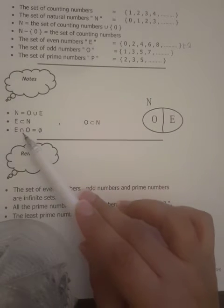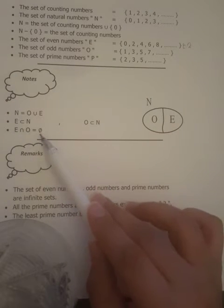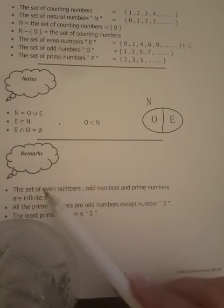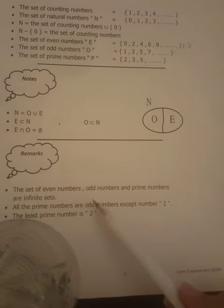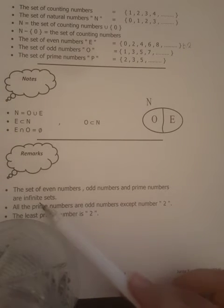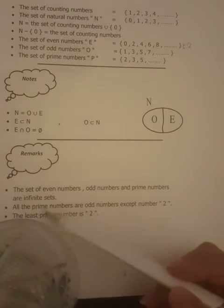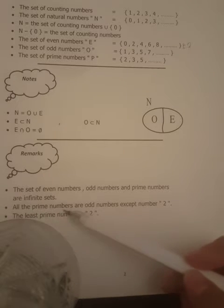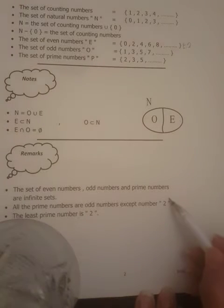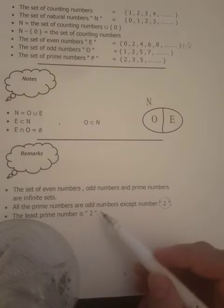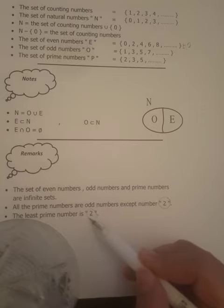Even numbers intersect the odd numbers equals phi — there is nothing common between the odd and the even. The set of even numbers, the odd numbers, and the prime numbers are all infinite sets. Remember, we don't know where they end. All prime numbers are odd except 2. The least prime number is 2.